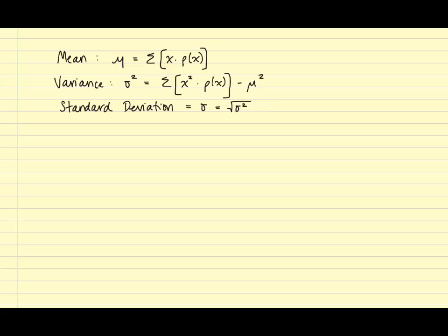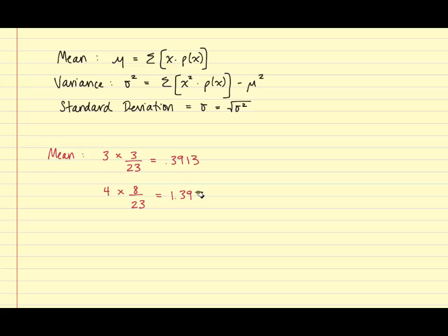First, we are going to compute the mean. The mean is found by taking each x times its corresponding probability and then summing them together. Our first x value was 3, multiplied by its corresponding probability of 3 over 23, and that equals 0.3913. Our second x value was 4, multiplied by its corresponding probability of 8 over 23, and that equals 1.3913. Our next x was 5, and 5 times its corresponding probability of 9 over 23 equals 1.9565. Our last x value of 6 times its corresponding probability of 3 over 23 equals 0.7826.